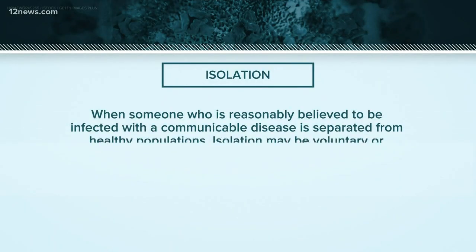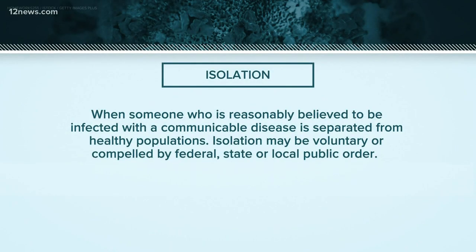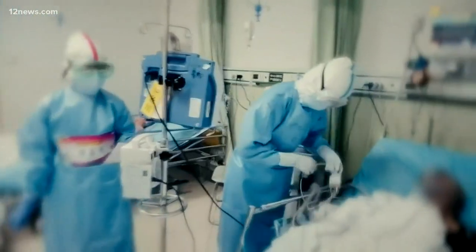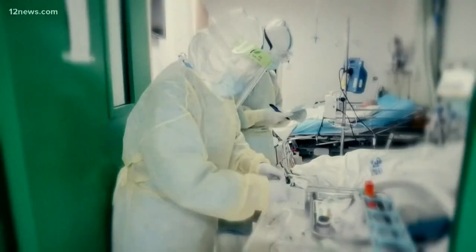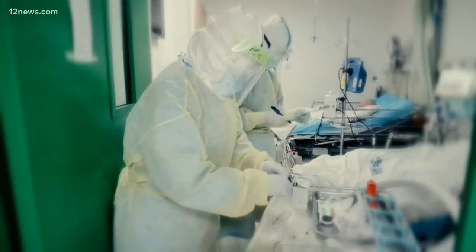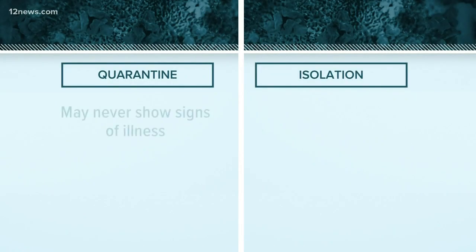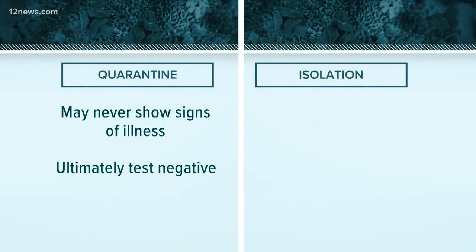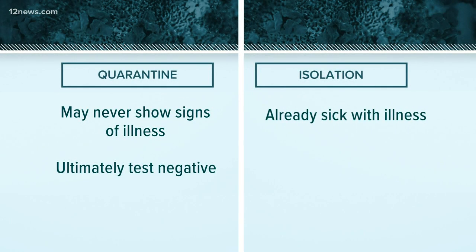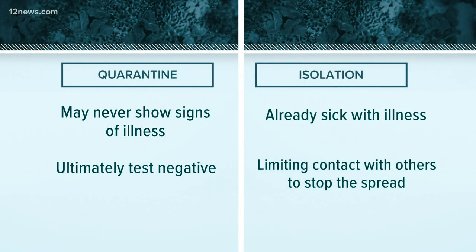And what about the term isolation? That's used when someone who is sick with a communicable disease is separated from others. The key difference between isolation and quarantine is whether or not the person does in fact have the disease. A person may be quarantined but never show any signs of the illness and ultimately test negative. Isolation is used when a person is already sick and is now limiting contact with others to stop the spread.